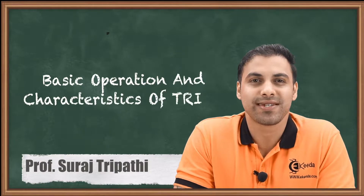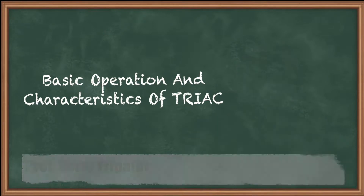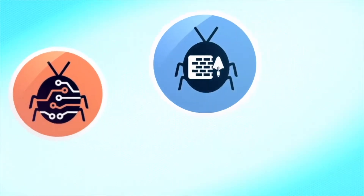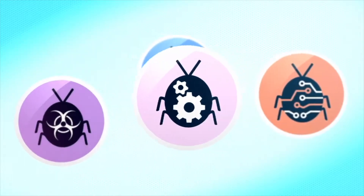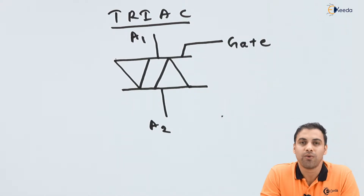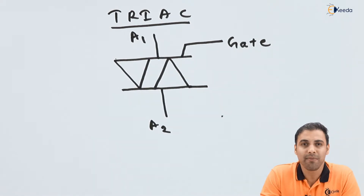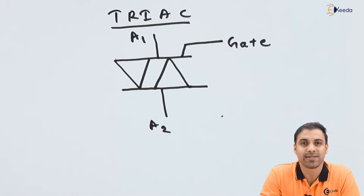Hello friends, today we are going to discuss the basic operation and various characteristics of a TRIAC. As we discussed the basic working principle and characteristics of a DIAC, a DIAC is very similar to a diode, but two diodes in opposite directions construct a DIAC. In a similar way, a TRIAC consists of two thyristors. Let's talk about how it is constructed, what is the symbolic diagram of a TRIAC, and what is its working principle.